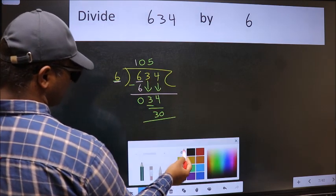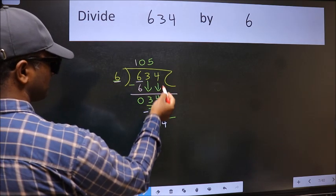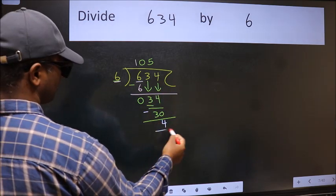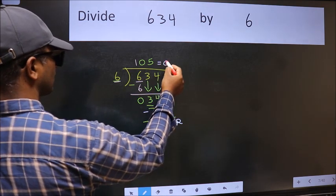Now we should subtract. We get 4. No more numbers to bring it down. So we stop here. This is our remainder and this is our quotient.